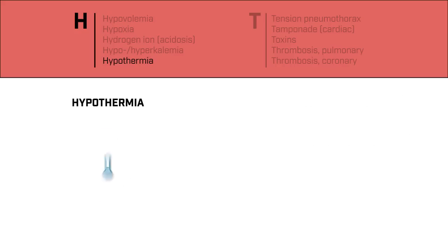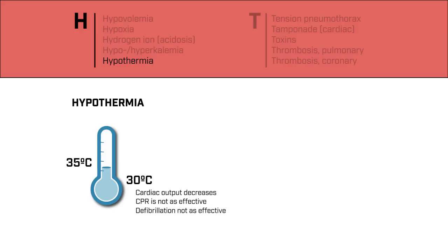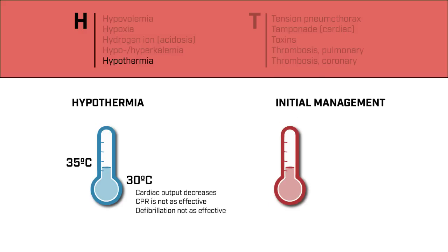Hypothermia is defined as a core temperature below 35 degrees Celsius. A person should never be declared dead unless they are warm and dead. When the body's core temperature drops below 30 degrees Celsius, cardiac output is decreased, which can lead to cardiac arrest. The body may not respond to CPR and defibrillation during these hypothermic states, so rewarming should be started — things like passive external rewarming with warm blankets, or active internal rewarming with warm IV fluids.